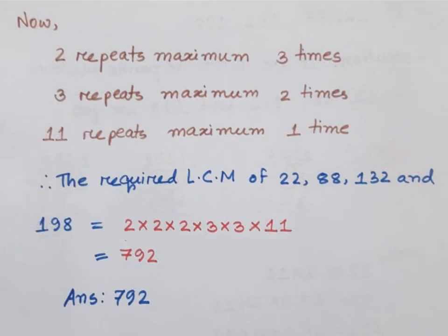2 repeats maximum 3 times, 3 repeats maximum 2 times, 11 repeats maximum 1 time. Therefore, the required LCM of 22, 88, 132, and 198 is equal to 2 × 2 × 2 × 3 × 3 × 11 = 792. Answer: LCM is 792.